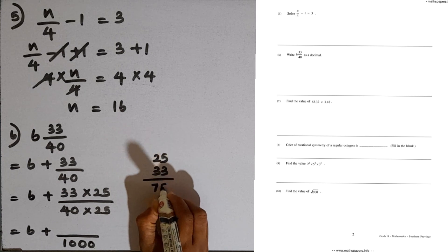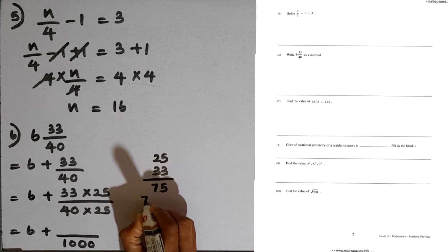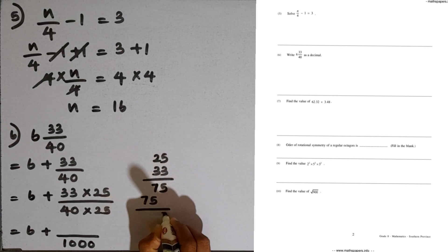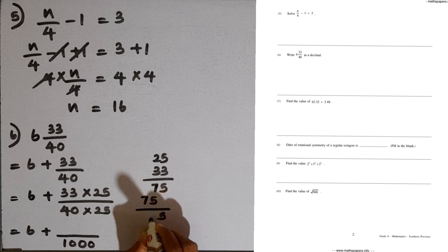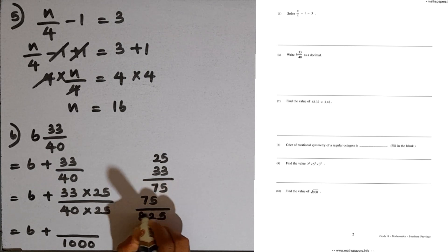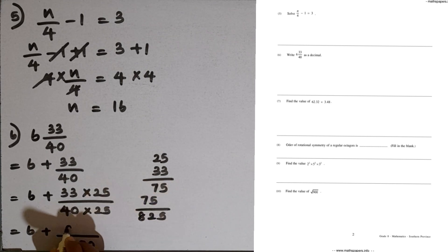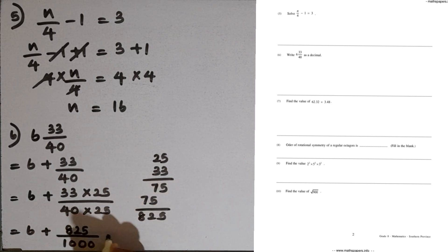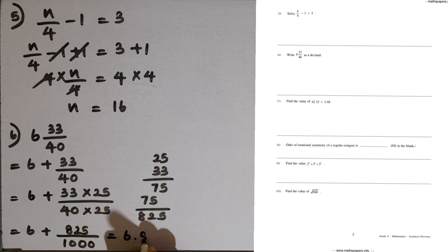Then 40 multiplied by 25 is 1000. We multiply 25 into 36 to get 900. So we have 6 plus 900 over 1000, which gives us 825 over 1000. Now we can write this decimal number as 6.825.